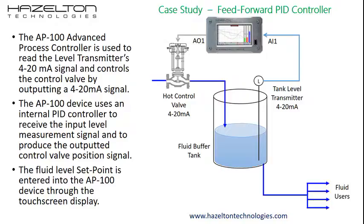The process under control is shown here. The level within the fluid buffer tank is controlled by a control valve on the inlet line into the tank. The level within the tank is measured with a level transmitter. There is an outlet line from the tank to supply fluid to the downstream users. The AP100 advanced process controller is used to read the level transmitter's 4 to 20 milliamp signal through its analog input 1.